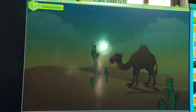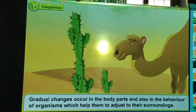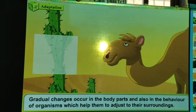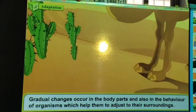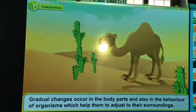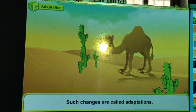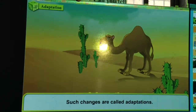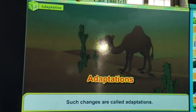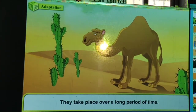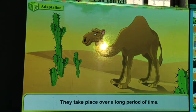Adaptation: gradual changes occur in the body parts and also in the behavior of organisms, which help them to adjust to their surroundings. Adaptation means that the plant or animal adjusts to that climate by making changes. For example, the camel has a hump on its back.